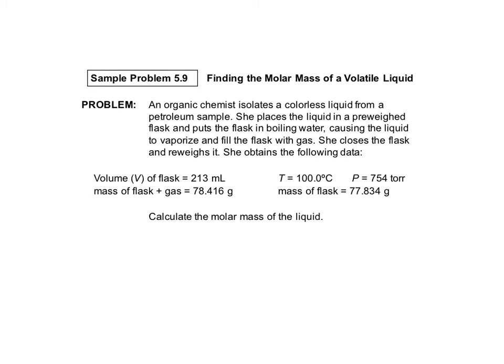Sample Problem 5.9 says, an organic chemist isolates a colorless liquid from a petroleum sample. She places the liquid in a pre-weighed flask and puts the flask in boiling water, causing the liquid to vaporize and fill the flask with gas. She closes the flask and re-weighs it. She obtains the following data.